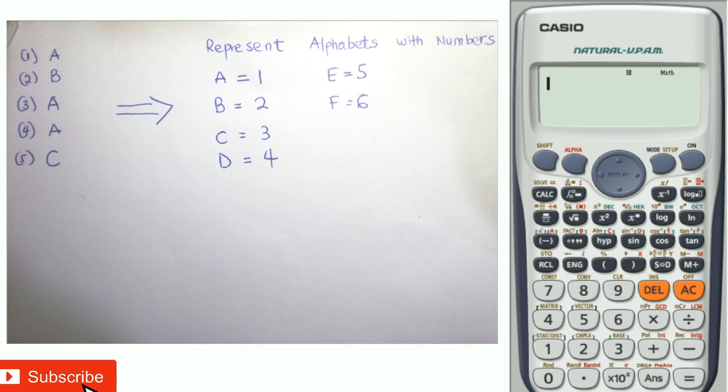Now moving on straight, looking at the image above, we have a set of answers one to five: one is A, two is B, three is A, four is A, five is C. Now in order to store alphabets on a calculator...